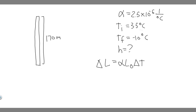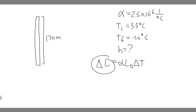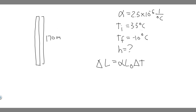Keep in mind what this is going to do: it's going to solve for the change in length. We want to know its initial state and then compare it to its final state in terms of temperature, find the change, and if we just subtract that from our initial, it's going to give us the new height or length at our new temperature.